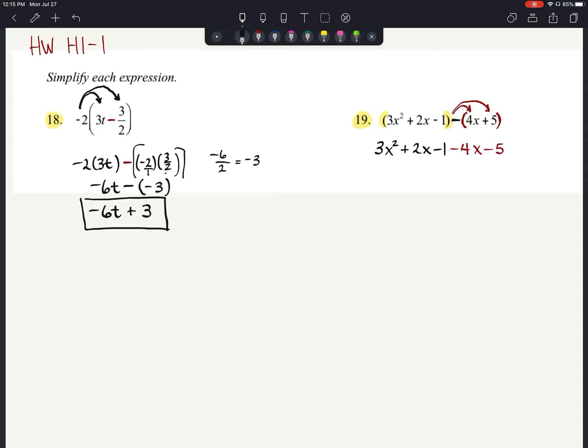And now we're just going to look to simplify by combining the like terms. We only have a 3x squared. There are no other squared terms. I've got a 2x, which is positive, and then I've got a negative 4x. When I combine those together, I've got two more negatives than positives, so minus 2x.